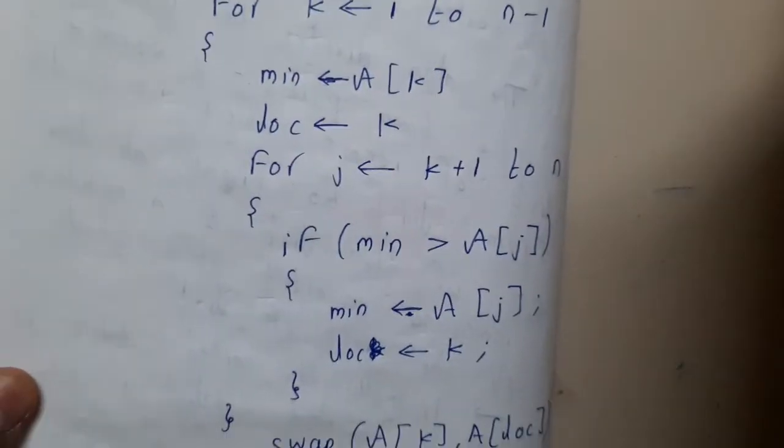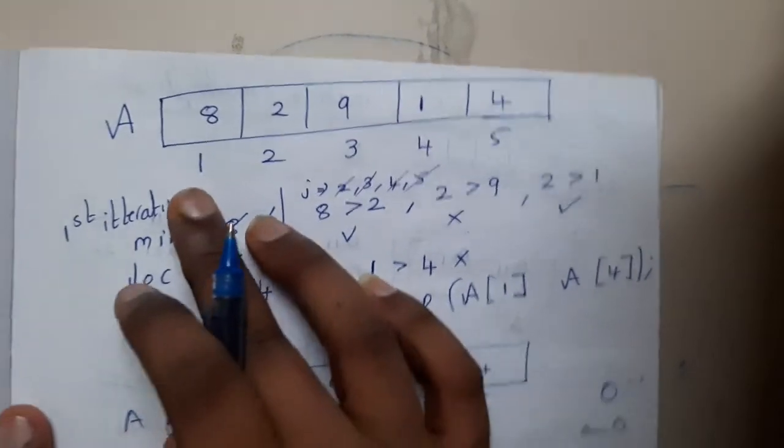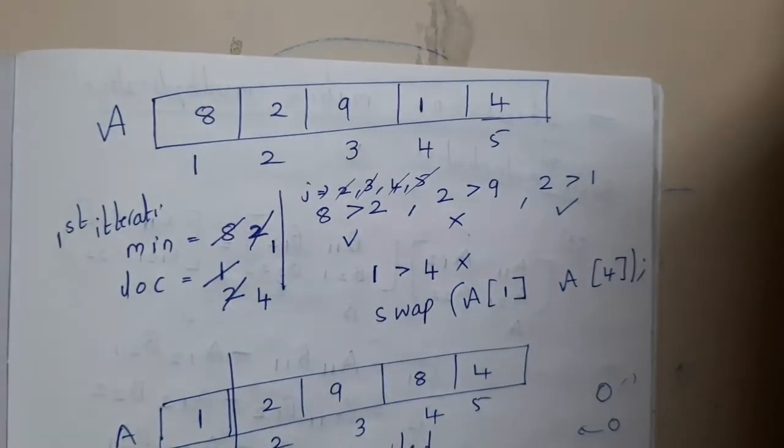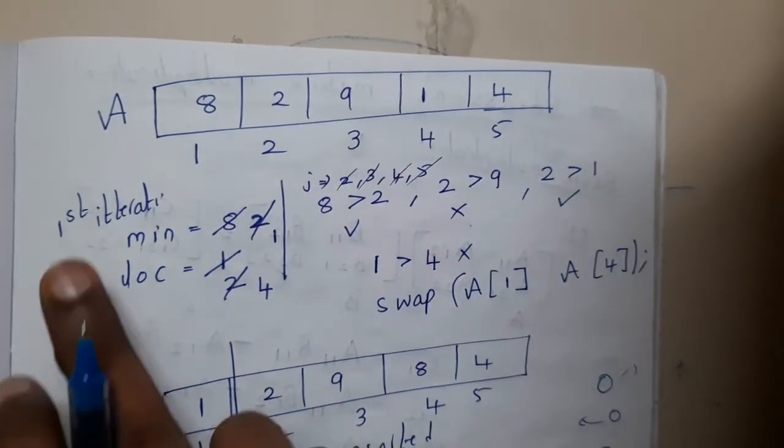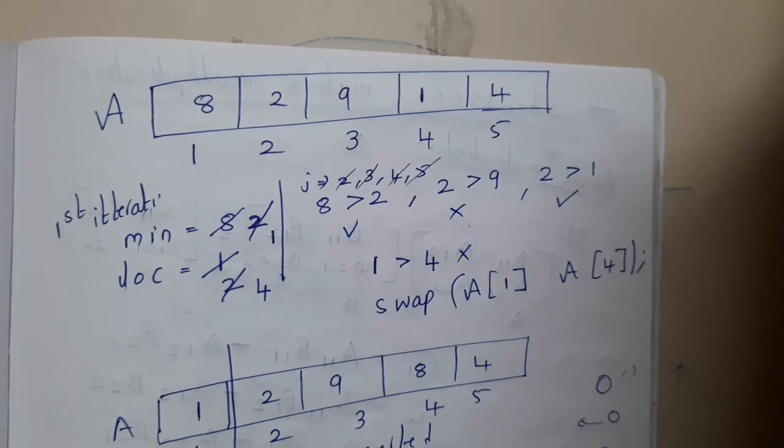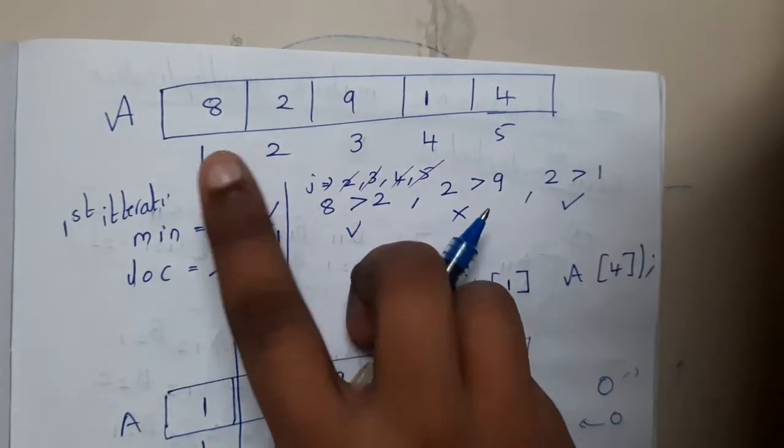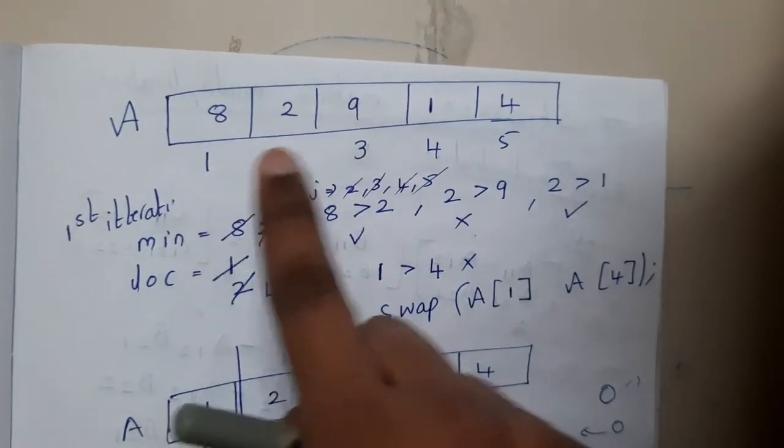Let us take an array: 8, 2, 9, 1, 4. This is a 5-element array with indices 1, 2, 3, 4, 5. We will be considering 4 iterations, n-1 iterations.